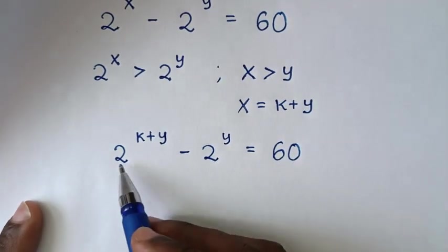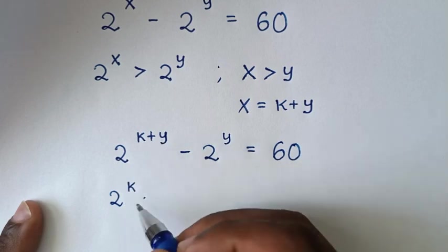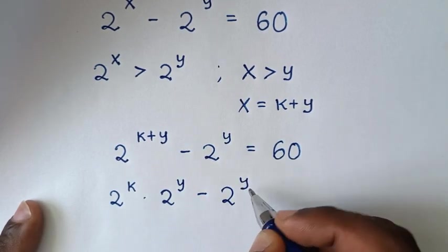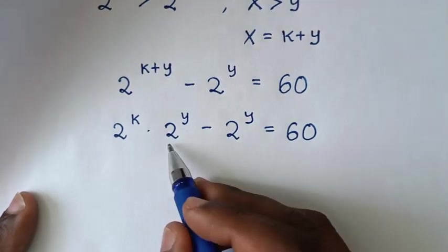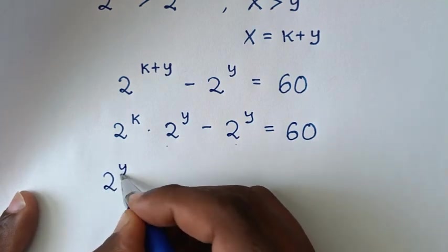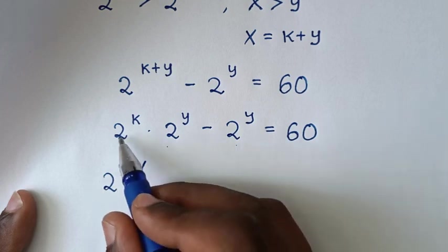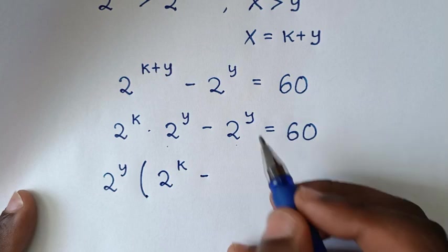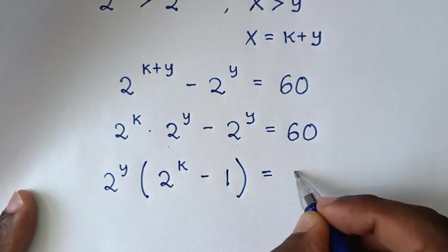Then in the next step, 2 power of k plus y is the same as 2 power of k times 2 power of y. So 2 power of k times 2 power of y, minus 2 power of y, is equal to 60. Then from here, 2 power of y is common, so we'll take 2 power of y out of the bracket. That gives 2 power of y times the quantity 2 power of k minus 1, is equal to 60.